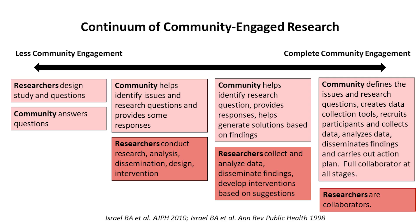Community engagement works along a continuum. With the least amount of community engagement, researchers design all aspects of the study, and the community really works only in answering the research questions. At the other end, with complete community engagement, the community drives the research and defines the issue and the question. The community creates the data collection tools and leads in the implementation of the study, as well as leads data analysis and dissemination of findings. With complete community engagement, researchers collaborate to help facilitate the process. Between the two ends of the spectrum, community members and researchers work collaboratively in the design, implementation, and dissemination of study findings.